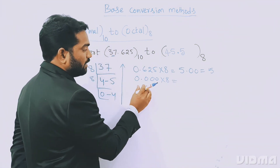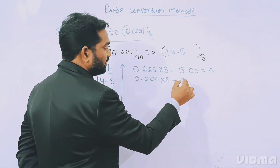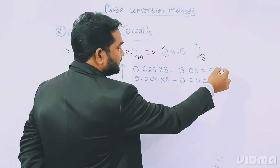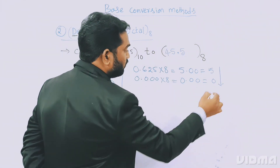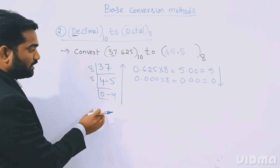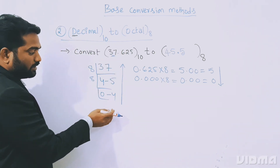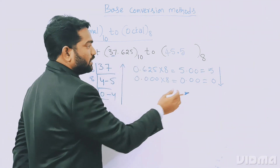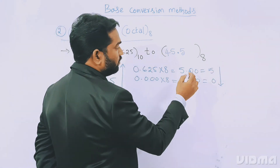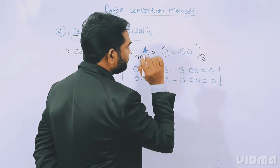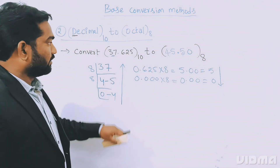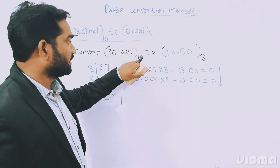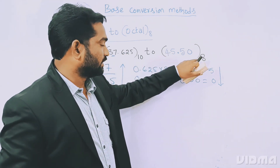Multiplying 0.00 by 8 gives 0. For the fractional part we write the answer from top to bottom — so we get 5, then 0. The full conversion of 37.625 base 10 to base 8 is 45.50.